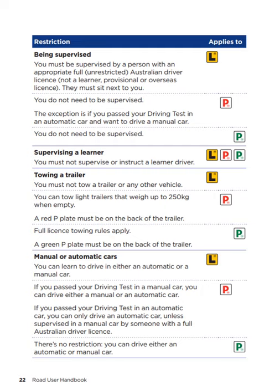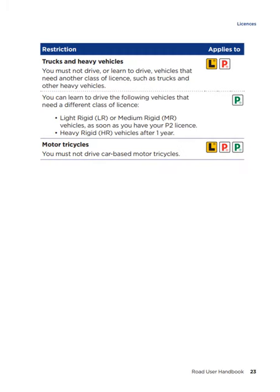Manual or automatic vehicles. You can learn to drive in either an automatic or a manual car when on your learner licence. If you passed your driving test in a manual car, you can drive either a manual or an automatic vehicle. If you passed your driving test in an automatic car, you can only drive an automatic car, unless supervised in a manual car by someone with a full Australian driver's licence. This applies to provisional P1 licence holders. Trucks and heavy vehicles: this applies to learner licences and provisional P1 licence holders. You must not drive or learn to drive vehicles that need another class of licence, such as trucks and other heavy vehicles.